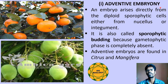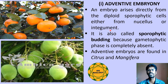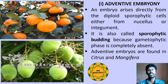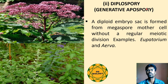In adventive embryony, the embryo arises directly from diploid sporophytic cells, either from the nucellus or integument. It is also called sporophytic budding because the gametophytic phase is completely absent. This type of adventive embryony is found mostly in citrus fruits and in Mangifera.